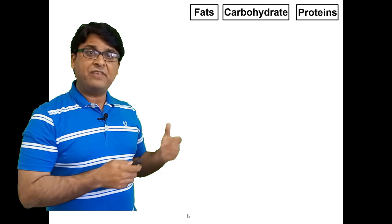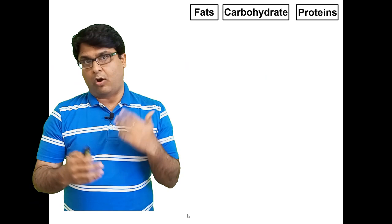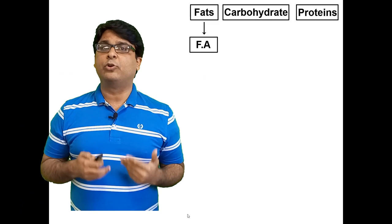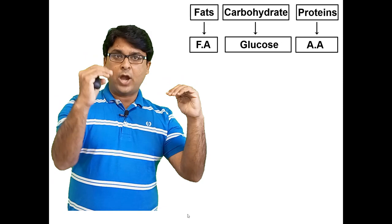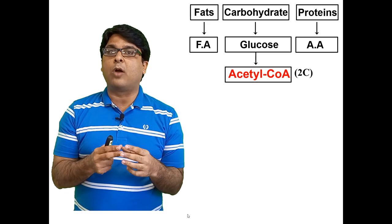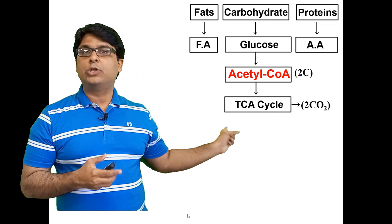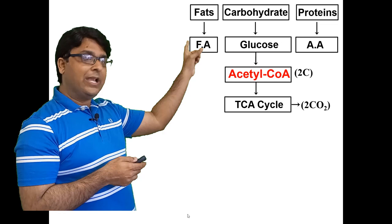When we eat, we are eating fats, carbohydrates, or proteins, or a combination. Fats are broken down into fatty acids, carbohydrates into glucose, and proteins into amino acids. All of these breakdown products — fatty acids, glucose, and amino acids — after different pathways produce a central molecule: a two-carbon compound called acetyl-CoA. Acetyl-CoA is the center of energy metabolism, and it enters a big cycle called the TCA Krebs cycle.